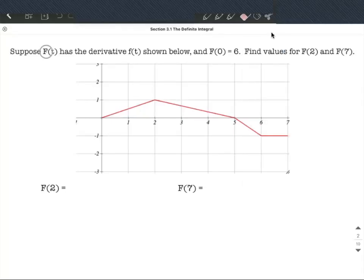We're told we have two functions, big F of t, and its derivative is going to be little f of t. Little f of t's graph is shown here, so there's no confusion. This is little f of t's graph in the picture.